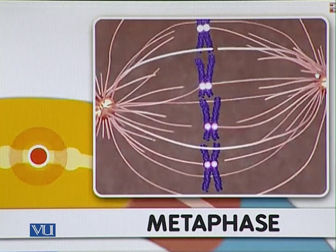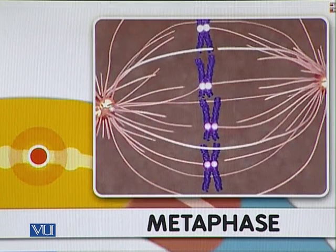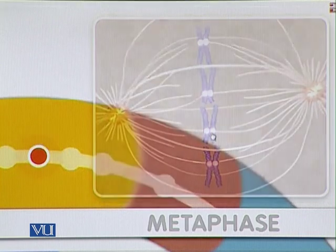Here is one pole and here is the other pole. For a particular chromosome which now has two kinetochores, one kinetochore is attached to the spindle on the right side and the other kinetochore attaches to the spindle on the left side.